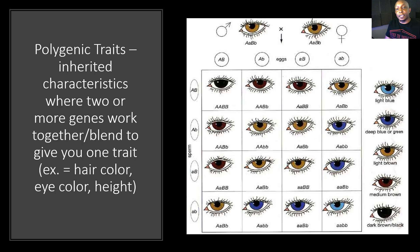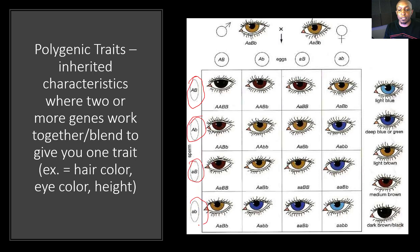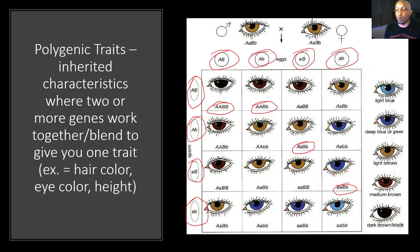Let's move on to polygenic traits. These are inherited characteristics where two or more genes work together or blend to give you one trait. Examples include hair color, eye color, and height. Looking at this dihybrid cross, notice the gene combinations coming from the sperm (dad) and the gene combinations across the top from the mom. Depending upon the gene combinations, a person can have any type of eye color — black eyes, brown eyes, light brown eyes, blue eyes, or light blue eyes — based on the combination of genes being put together.